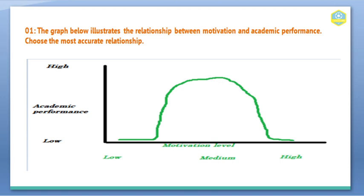Here's question number one: the graph below illustrates the relationship between motivation and academic performance — choose the most accurate relationship. First, you need to understand the question. The horizontal part shows motivation and the vertical part shows academic performance. What we're looking for is: if one thing increases, what happens to the other thing?